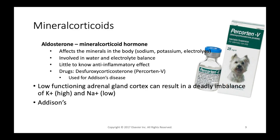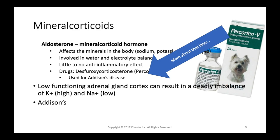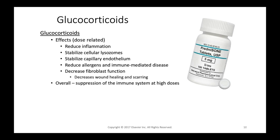Mineralocorticoids are one class of corticosteroids. The main hormone they mimic is aldosterone, and they affect the minerals in the body — sodium, potassium, and overall electrolytes. They have little to no anti-inflammatory effect. Common drugs include Percortin-V, an injectable mineralocorticoid used for Addison's disease, and Florinef, an oral form also used for Addison's. Animals with a low-functioning adrenal cortex develop a deadly imbalance of high potassium and low sodium — known as Addison's disease or hypoadrenocorticism. This will be covered in greater detail when discussing endocrine drugs.